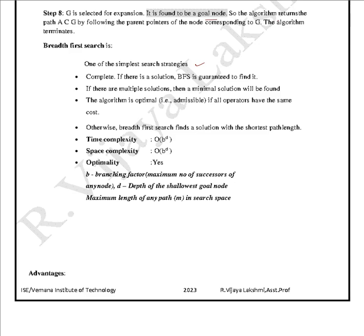Breadth first search is one of the simplest search strategies. It is complete — if there is a solution, it is guaranteed to find it. If there are multiple solutions, it finds the minimal one. The algorithm is optimal; breadth first search finds a solution with the shortest path length. Time complexity is O(B^D) and space complexity is O(B^D), where B is the branching factor and D is the depth of the shallowest goal node.